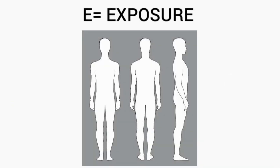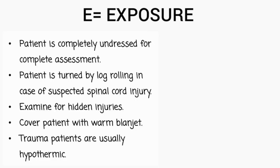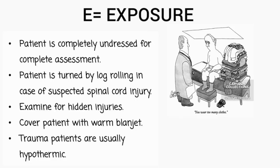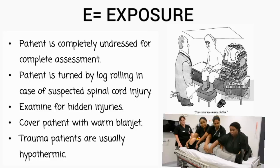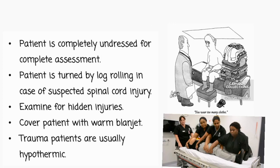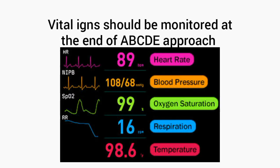The final component of the primary survey is E — Exposure. The patient is completely undressed to perform a complete assessment. If spinal cord injury is suspected, the patient is turned by log rolling, and examined for any hidden injuries. Once this is done, always cover the patient with warm blankets, as trauma patients are usually hypothermic. Vital signs should be monitored at the end of the ABCDE approach.